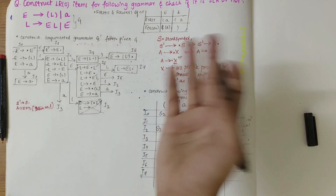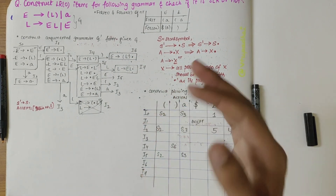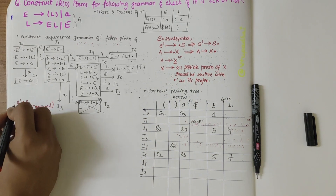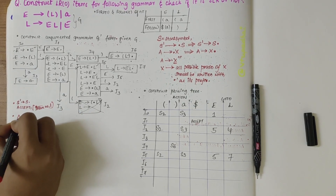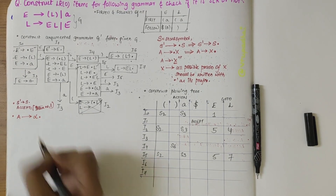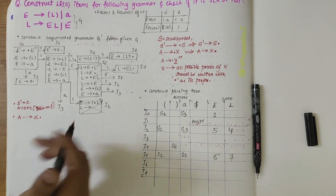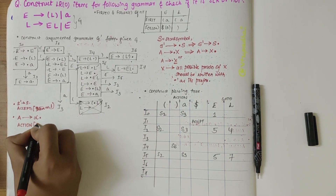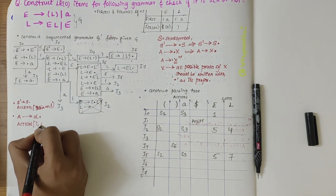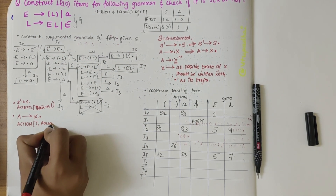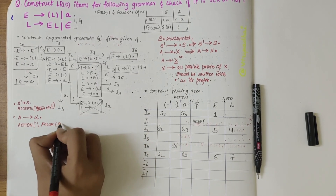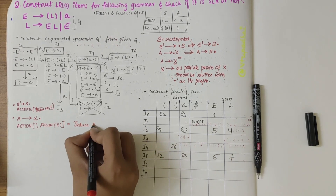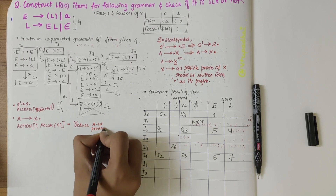I6 and I7 cannot have anything further written for shifts. Now we need to look at the reduce part. For reduce, remember that the production should be of the form A derives alpha dot. If so, in the action column for that item number comma follow of the left-hand side A, you write reduce of that production number. Also remember A should not equal S dash.